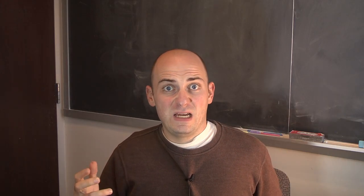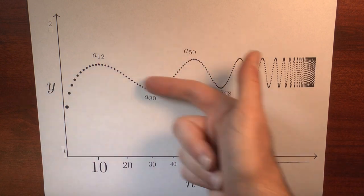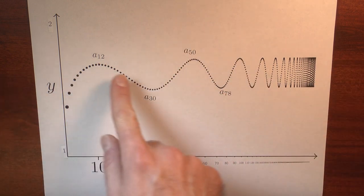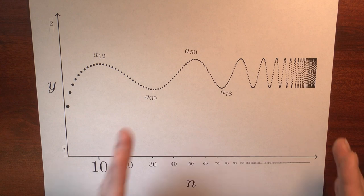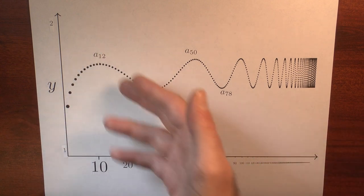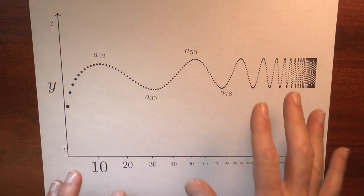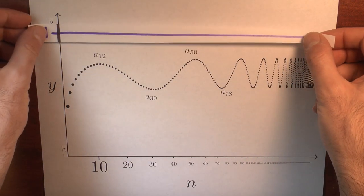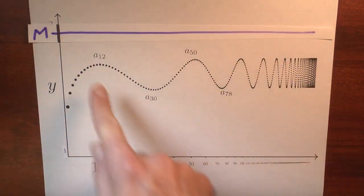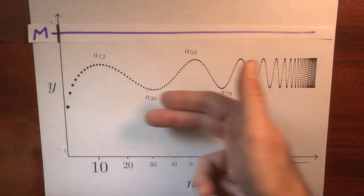We can think about this graphically. Here's the graph of some sequence. Each of these dots represents a term in the sequence, and the height of the dot represents the value of that particular term. I've positioned these terms in a compressed way — the labels on the n-axis aren't all equally spaced. I'm squishing them together so I can fit the entire future of this sequence on a single sheet of paper. The sequence is bounded, meaning these terms never exceed some bounding value. Here I've picked some value m — no term of this sequence is above this horizontal line. This horizontal line represents an upper bound for this sequence.